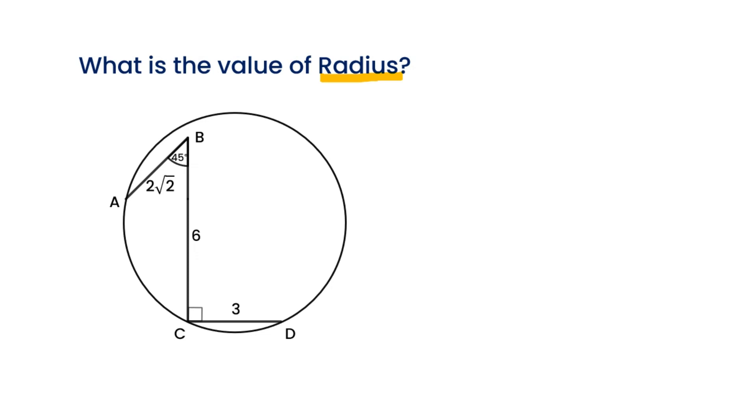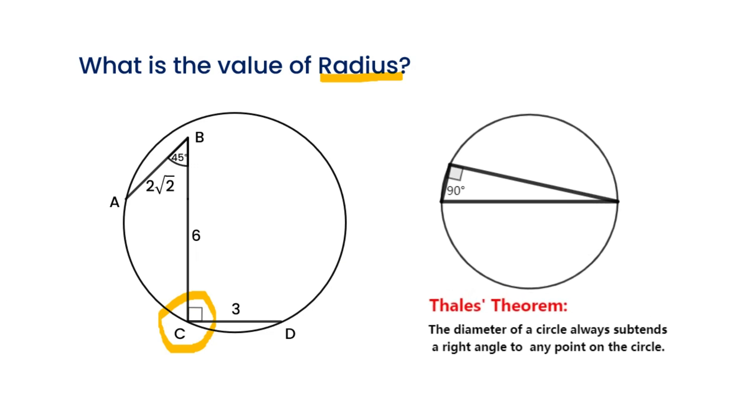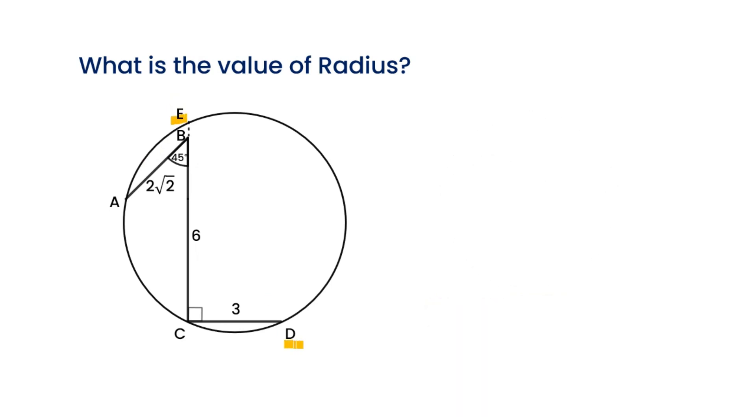First, let's check this diagram. Angle C is a right angle. From Thales' theorem, we know a diameter subtends a right angle on the circle. If we extend CB to the circle and intersect at point E, then connect DE, DE is the diameter of the circle.